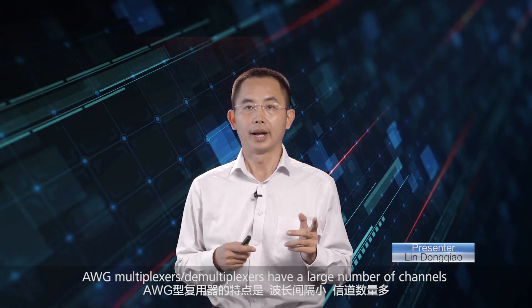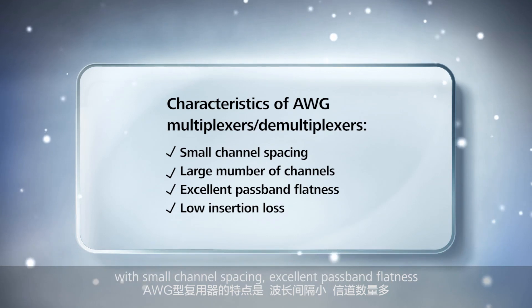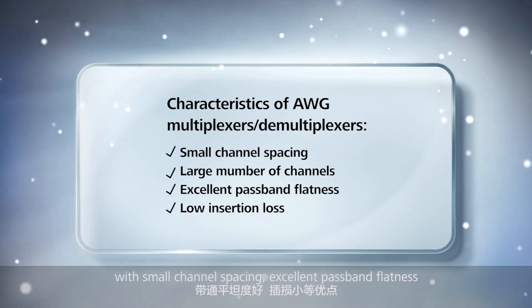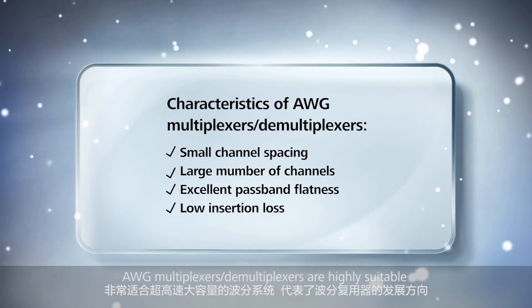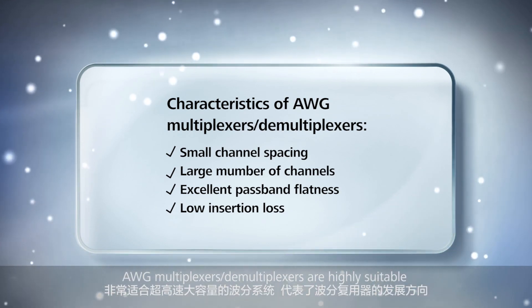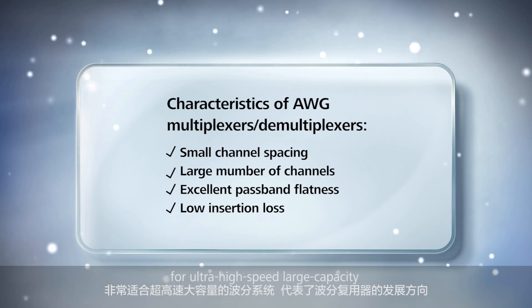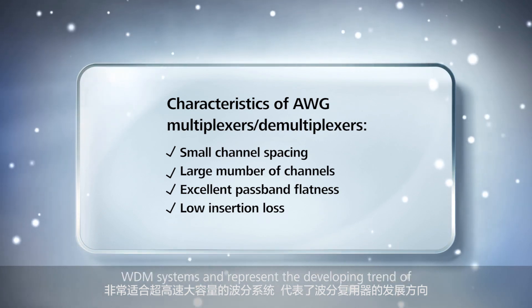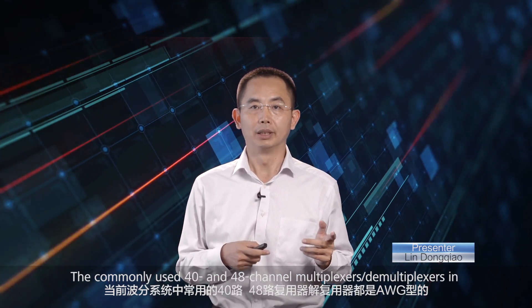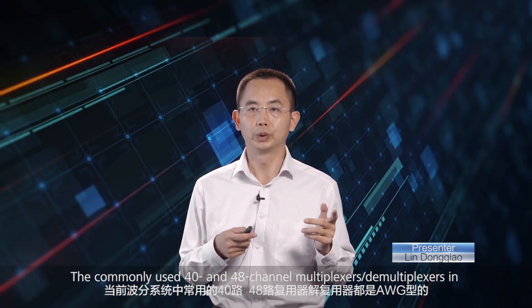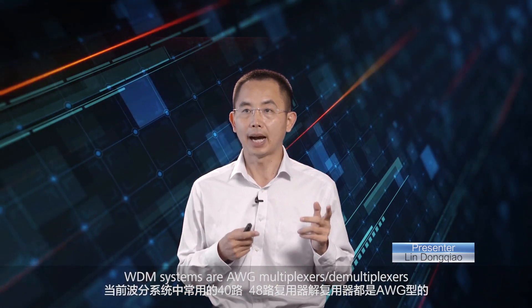AWG multiplexers and demultiplexers have a large number of channels with small channel spacing, excellent passband flatness, and low insertion loss. They are highly suitable for ultra-high-speed, large-capacity WDM systems and represent the developing trend of WDM multiplexing-demultiplexing components. The commonly used 40- and 48-channel multiplexers and demultiplexers in WDM systems are of the AWG type.